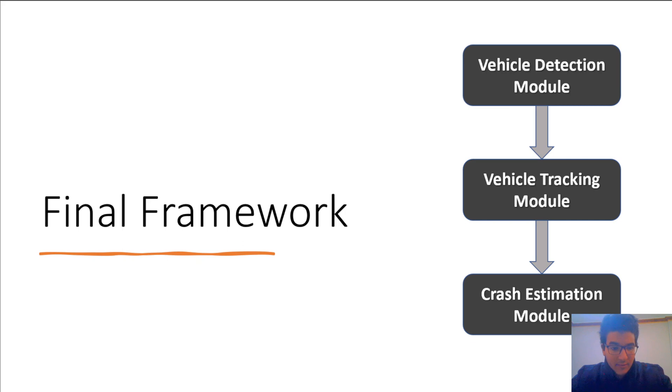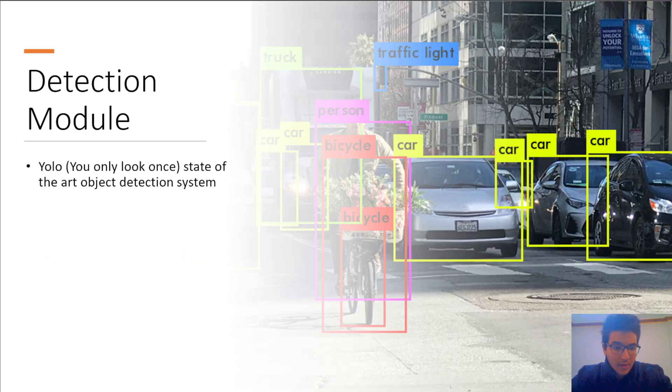So, our final framework is that, detection, then tracking, and end with crash estimation. In detection module, we used a famous deep neural network called YOLO. It is fast and accurate in detection. Input to this module is one second, and the one second contains 30 frames. We only process in YOLO the first frame and send the rest to the tracking module.